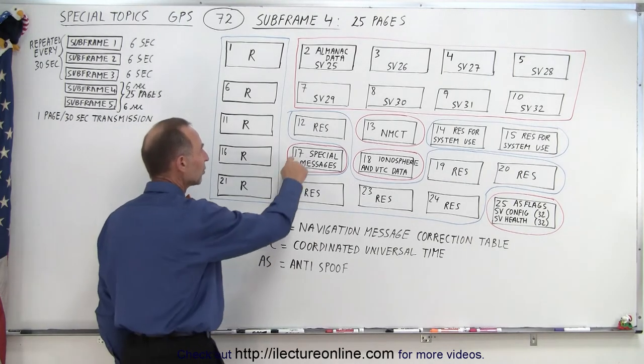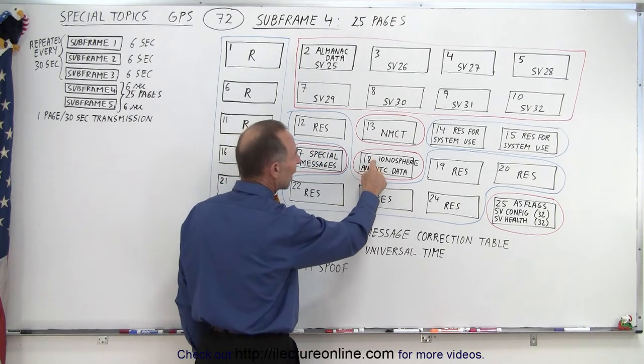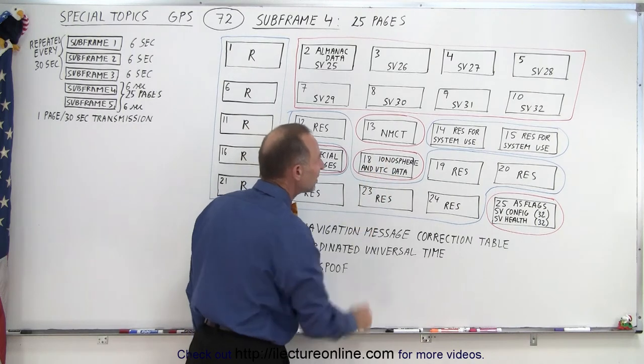There's also a page that contains some special messages. Again we'll take a look at what those are and then on page 18 we have ionosphere and UTC data.